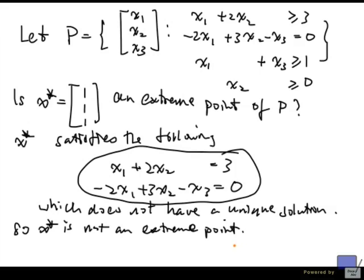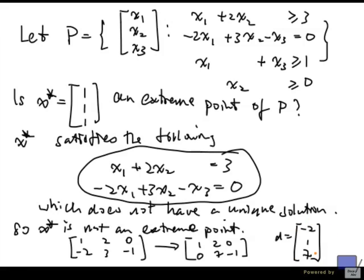What you do is very simple. We first find a non-zero solution to null space of the coefficient matrix. So let's write down the coefficient matrix here. And if we do a row reduction, what we can take is d equals minus 2, 1, 7.